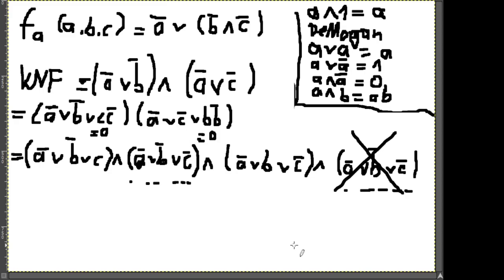Also KNF das Gleiche wie DNF, nur andere Verknüpfungsebenen: auf oberster Ebene das Und, in den Termen das Oder. Etwas spannender wird das Ganze mit der Reed-Muller-Form. Die haben die meisten wahrscheinlich noch nicht irgendwo erlebt.